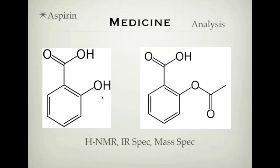In mass spec, obviously they're going to have different masses, so you'll have a different mass for the molecular ion. All three of these techniques — HNMR, IR spec, and mass spec — can differentiate between the two. In carbon NMR, aspirin has two more carbon environments than salicylic acid. So these are the ways we can analyse and look at the difference between these two molecules.